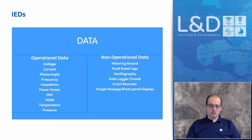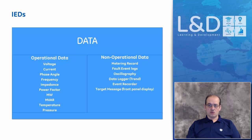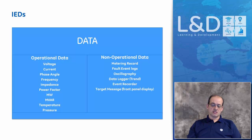Operational data has to do with existing values being measured: voltage, current, phase angle, frequency, impedance, power factor, megawatts, and megavars. Non-operational data includes metering records, fault event records, disturbance records, data loggers, event recorders, and target messages — messages that have to be displayed on the front LCD as part of the device's functionality.